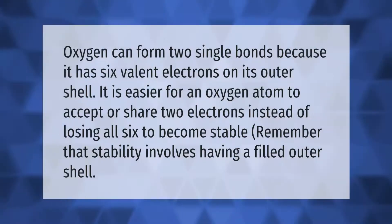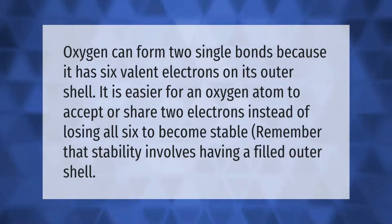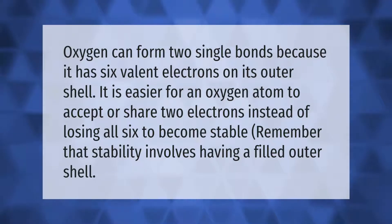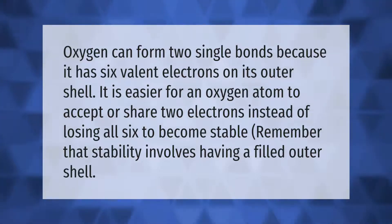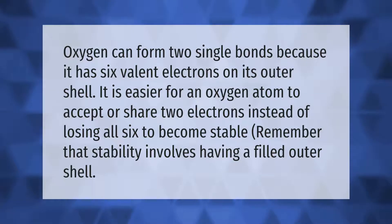Oxygen can form two single bonds because it has six valence electrons on its outer shell. It is easier for an oxygen atom to accept or share two electrons instead of losing all six to become stable. Remember that stability involves having a filled outer shell.